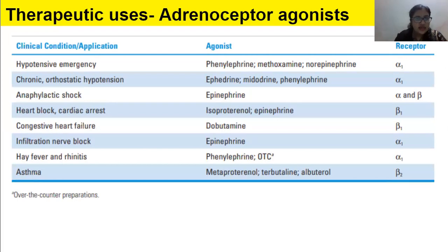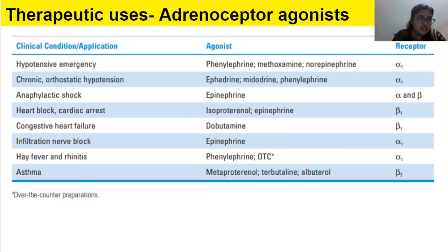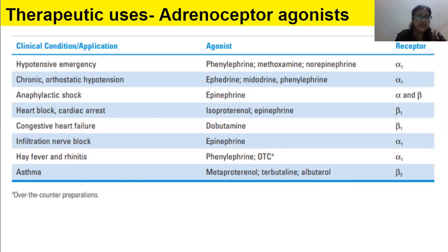For anaphylactic shock, epinephrine is used via alpha and beta receptors. For cardiac arrest or heart block, isoproterenol or epinephrine is given. For congestive heart failure — where the ventricle wall thickens and systole becomes ineffective — dobutamine is given. For infiltration nerve block, epinephrine is used.